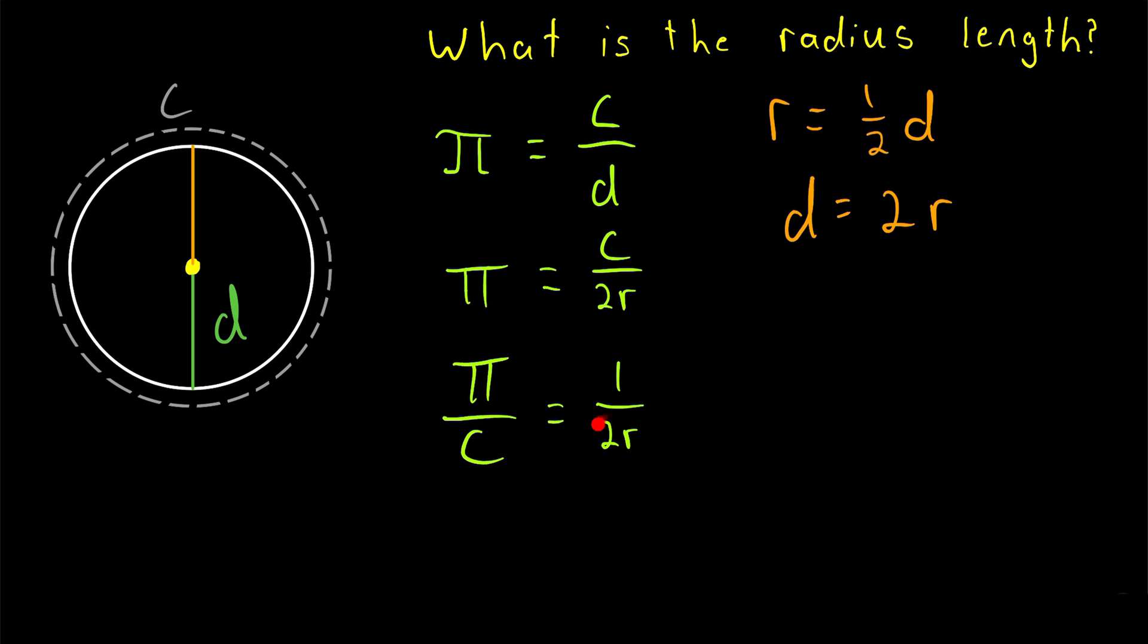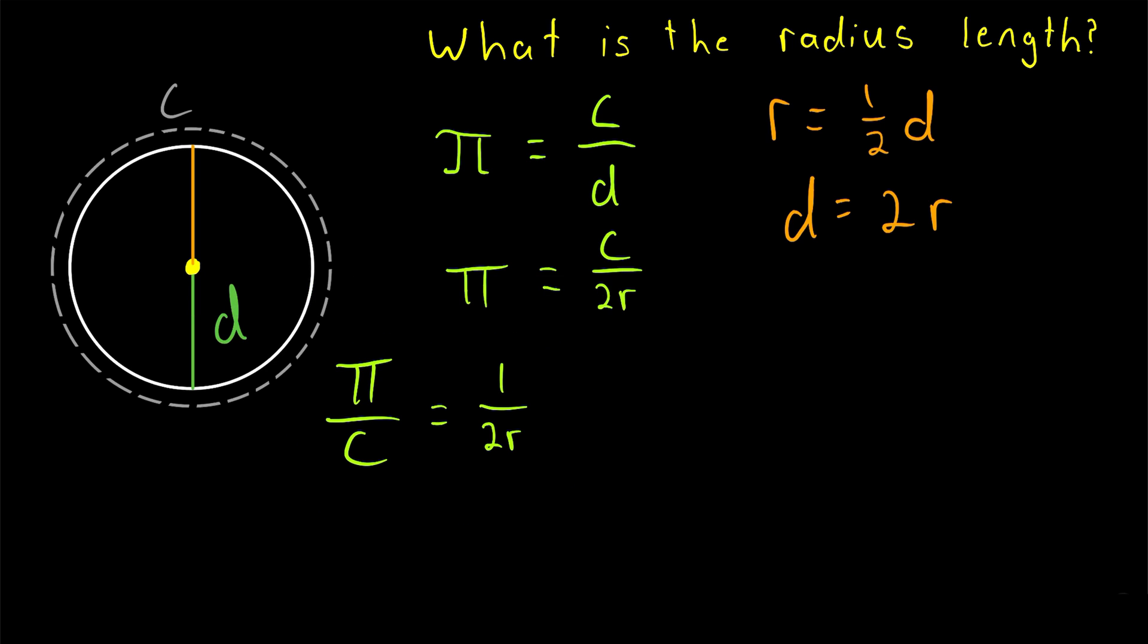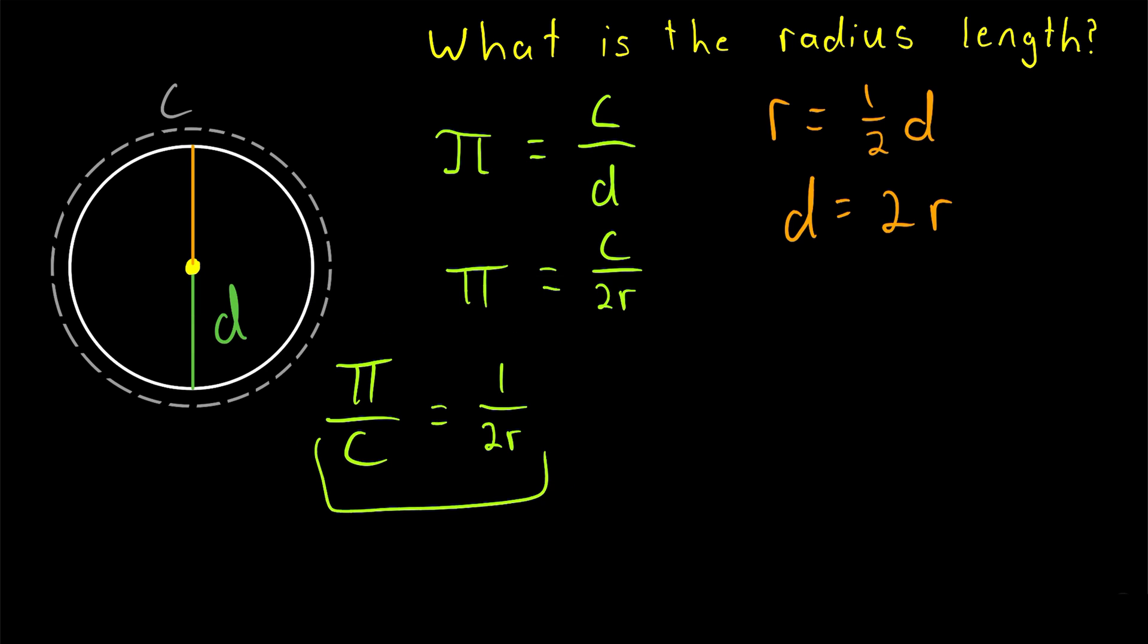Then to get 2 times the radius into the numerator, all we have to do is raise both sides of this equation to the power of negative 1, which put simply, we'll just flip both fractions. So we'll go from this equation to the circumference divided by pi being equal to 2 times the radius. And again, that's just raising both sides of the equation to the same power, negative 1, which has the effect of flipping both fractions.